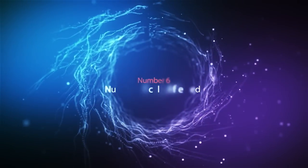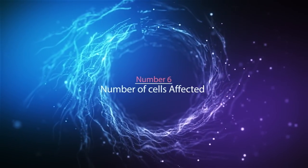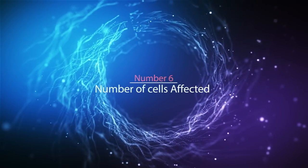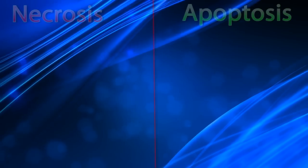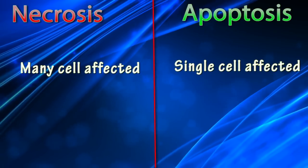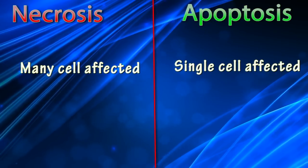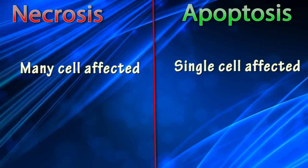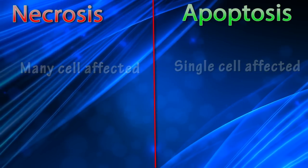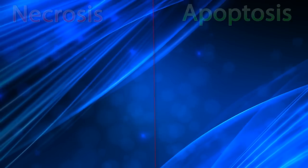Difference number six: number of cells affected. Many cells are affected in the necrosis process, but usually only a single cell is affected in the apoptosis process.